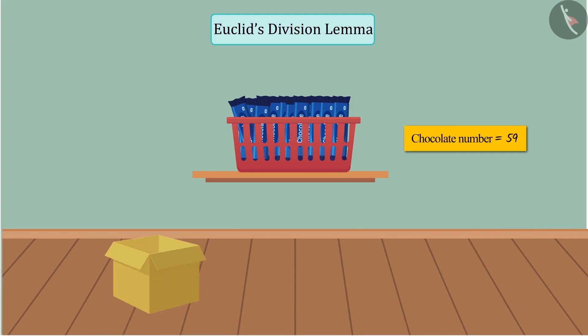We have 59 chocolates and 3 boxes. We have to keep equal number of chocolates in all the 3 boxes. Can you keep an equal number of chocolates?